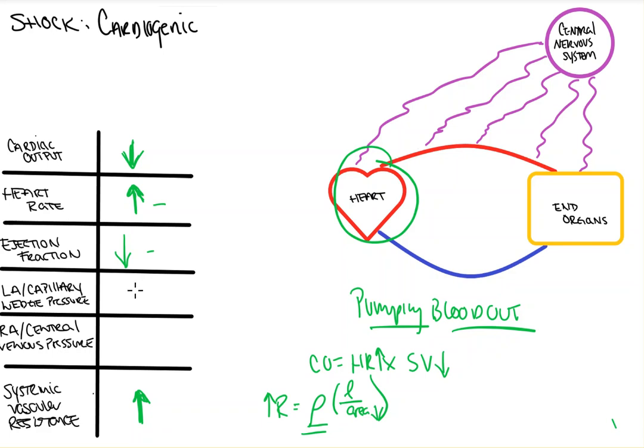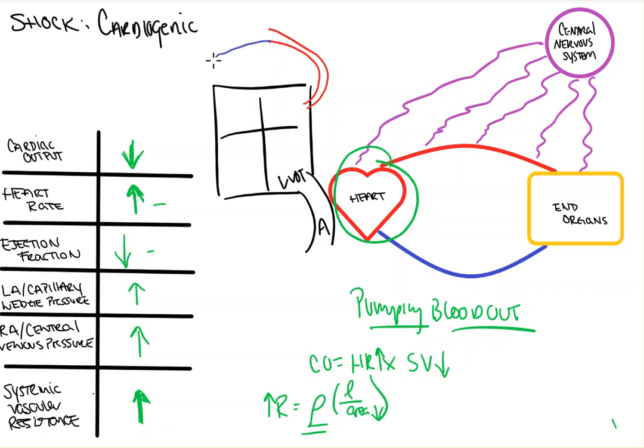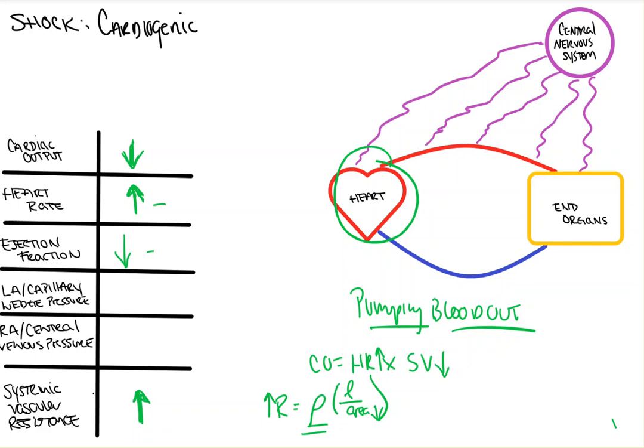Our left atrial capillary wedge pressure will go up, and our right atrial, or our central venous pressure, will go up. And the reason is, if we're looking at this box as our heart, and this here is our left ventricular outflow tract, that's our aorta here. And blood is able, we'll put this to the lungs, and we'll say this goes back to the right side of the heart, and our lungs are up here to oxygenate. The other thing that's going to happen is our left atrial, or our capillary wedge pressure, and our right atrial, or our central venous pressures, are also going to go up.